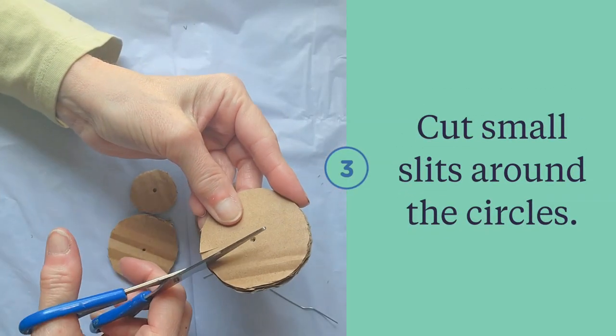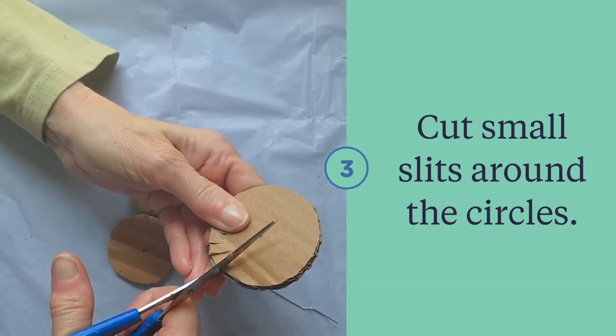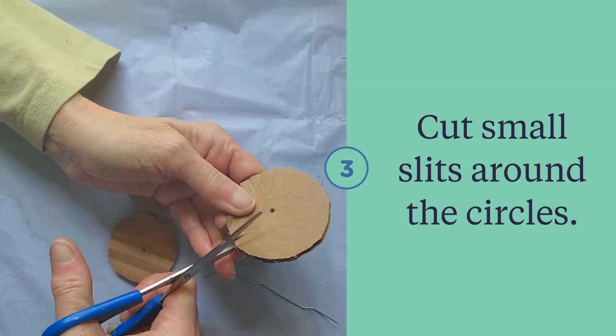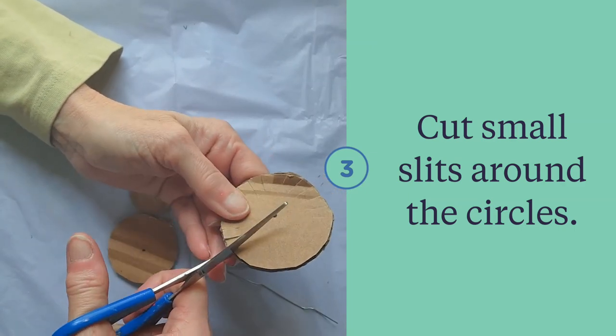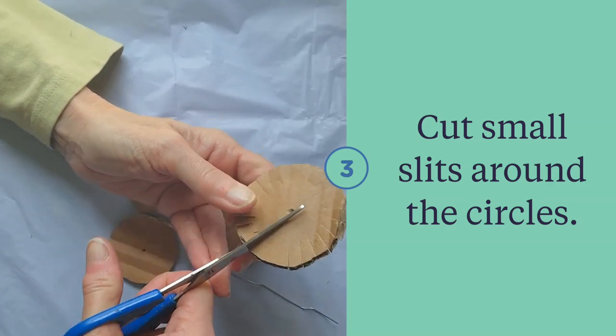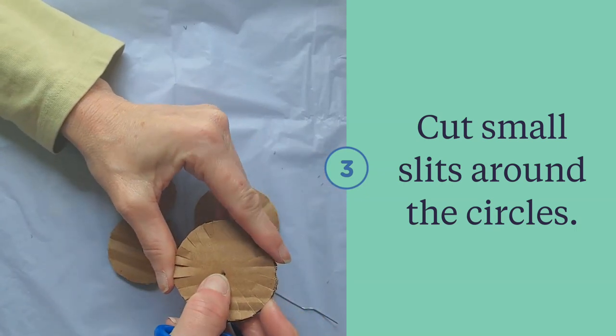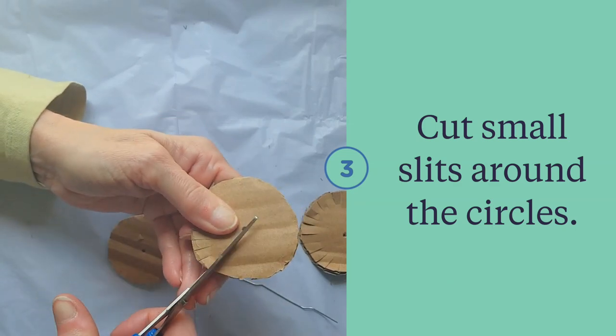Now it's time to cut little slits all the way around each and every circle. Don't go in too far, you're staying on the edge. Takes a little while, but you'll see they become awesome little petals.